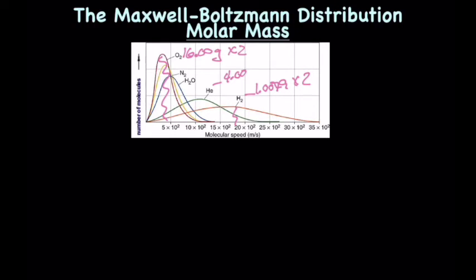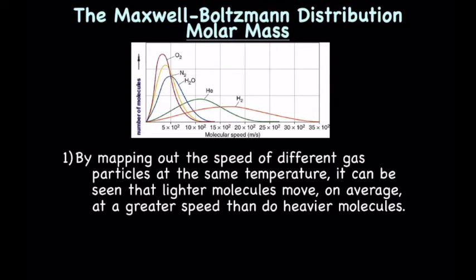I'm not going to do the math for all of these, but you can figure it out. So what could you say about the Maxwell-Boltzmann distribution in terms of molar mass? By mapping out the speeds of different gas particles at the same temperature, it can be seen that lighter molecules move, on average, at greater speeds than do heavier molecules.